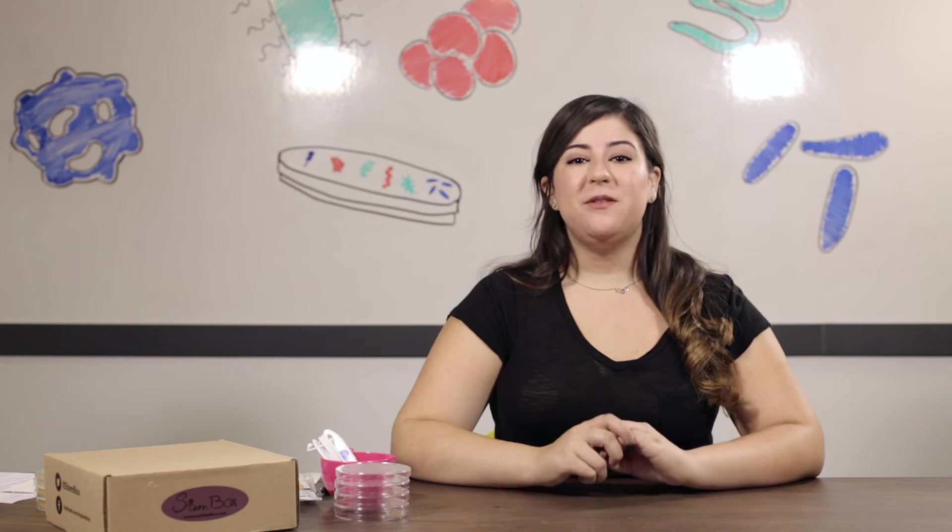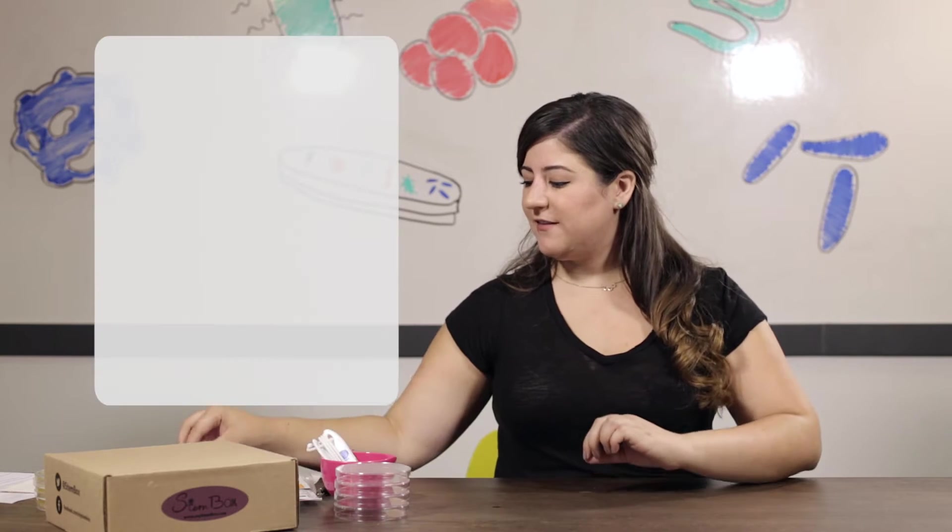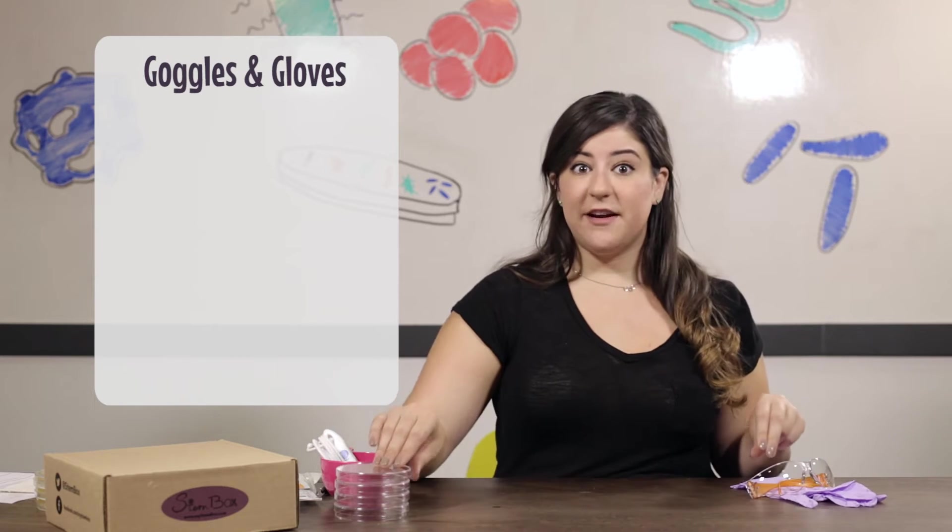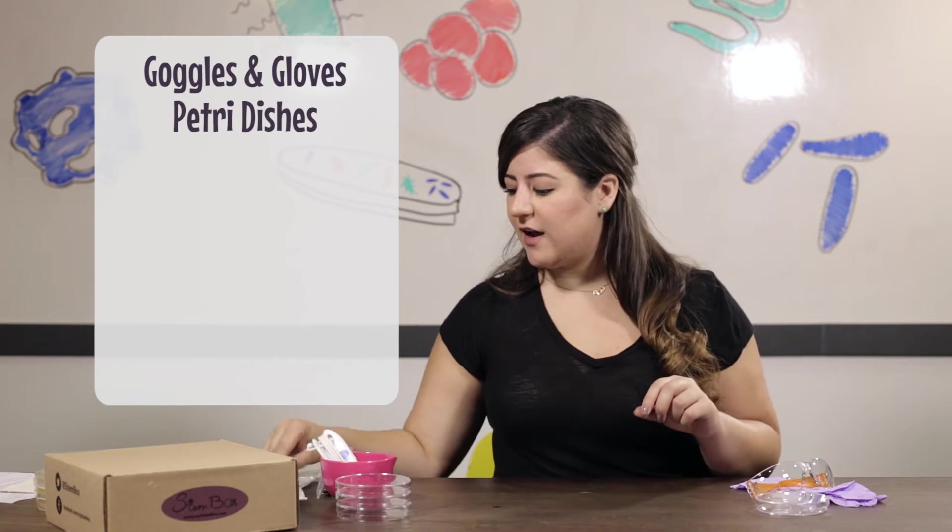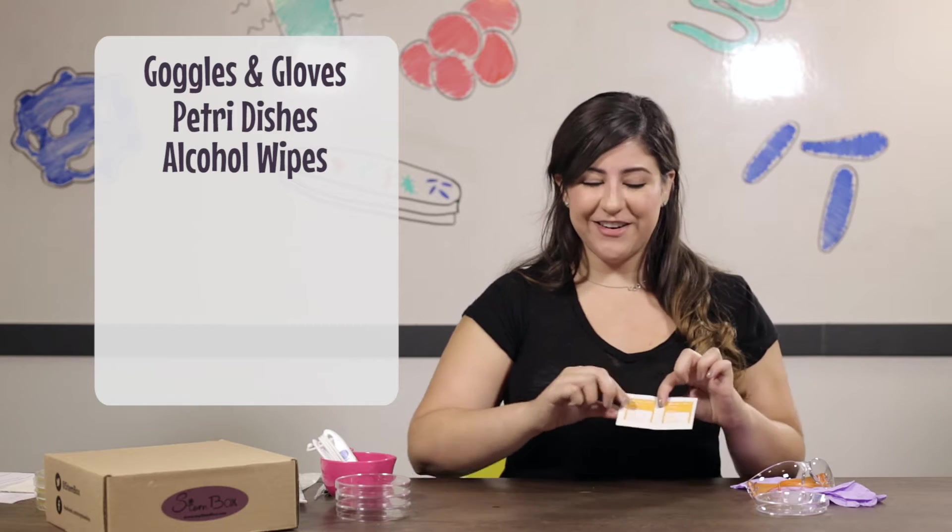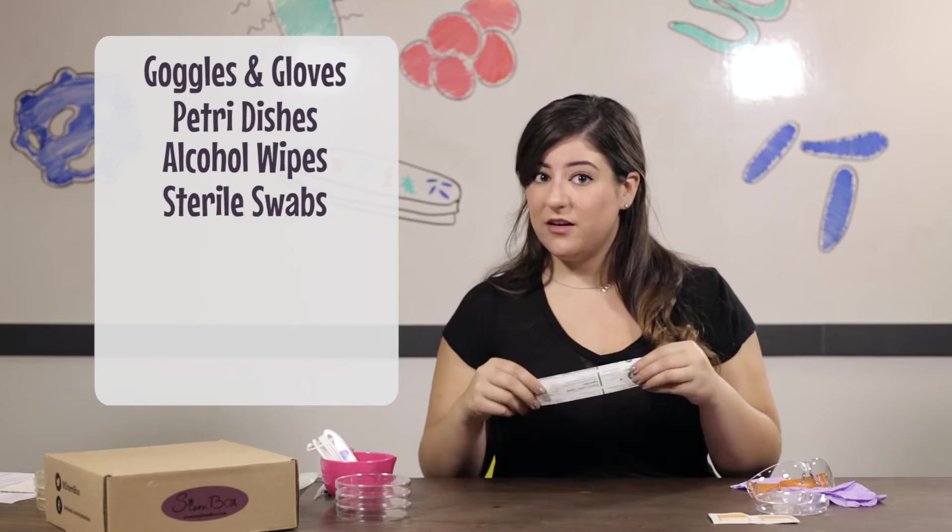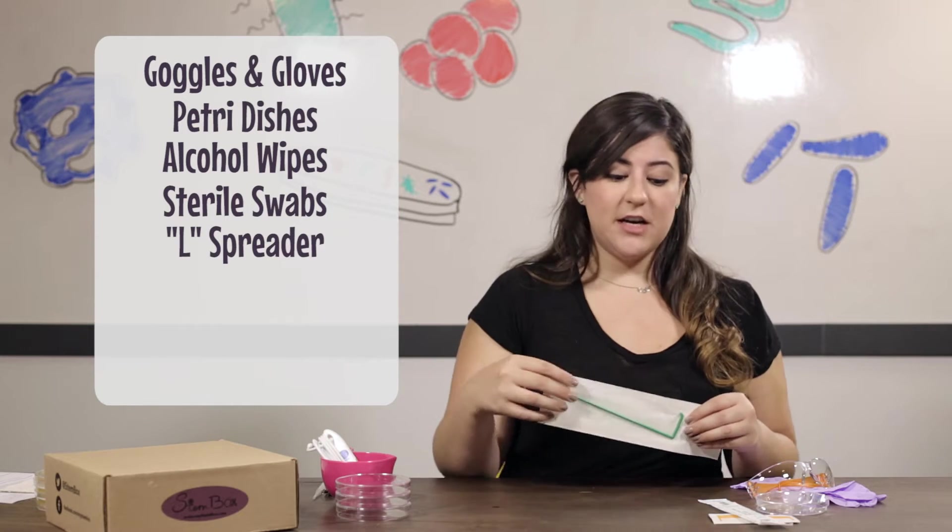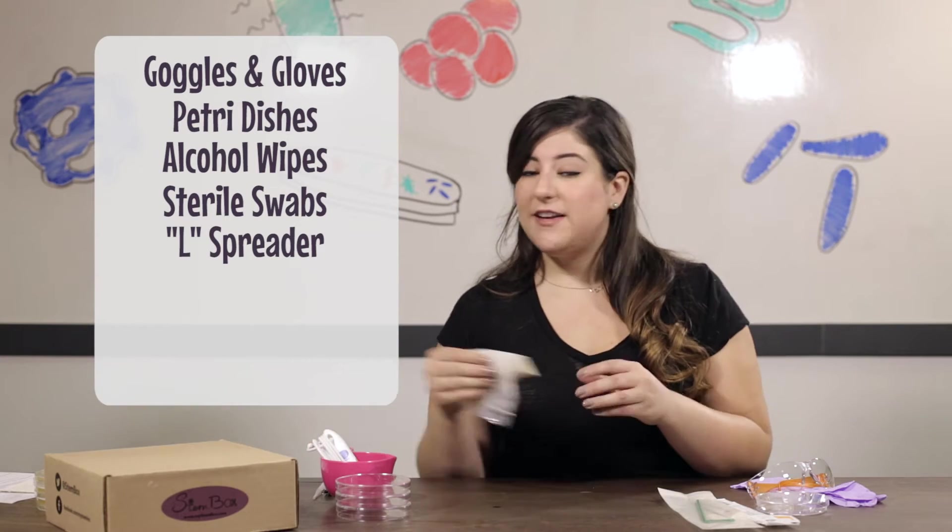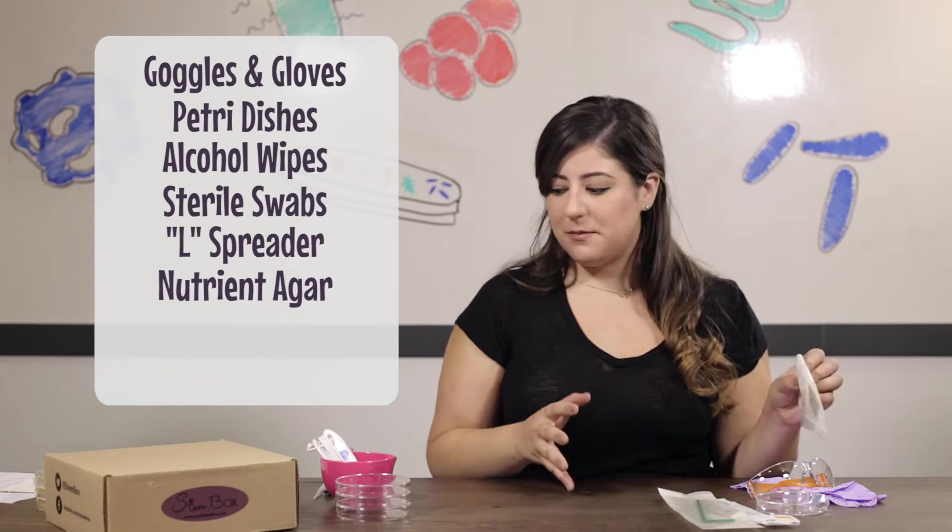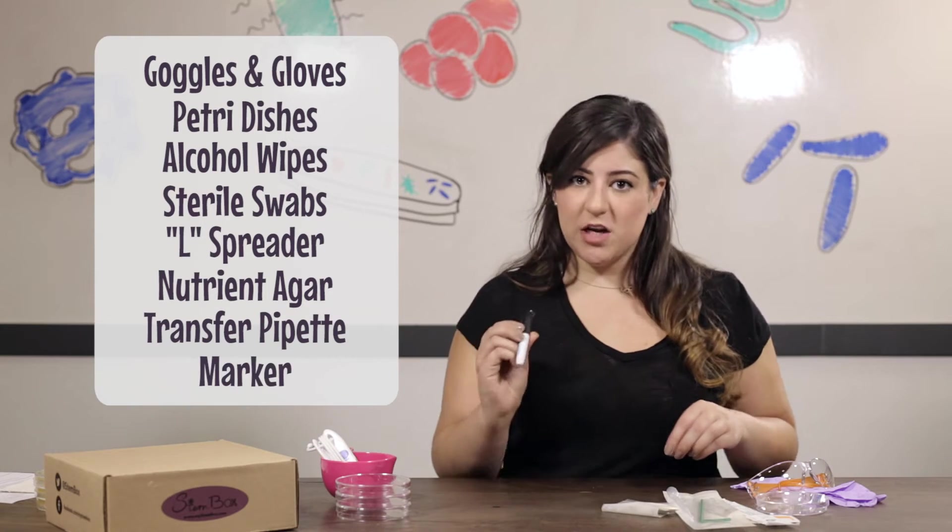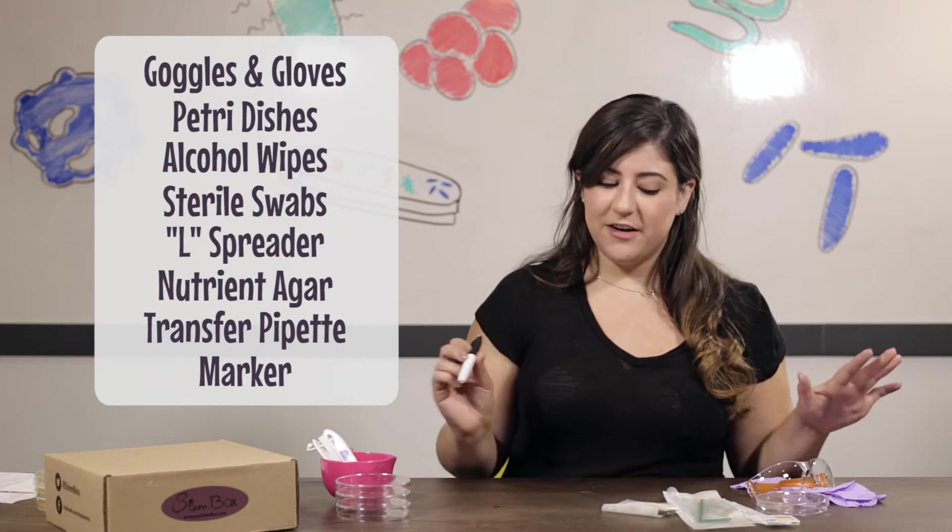This month's Stembox will include the following items. Safety gear as usual like goggles and gloves. You'll have several petri dishes for your cultures. You will have alcohol wipes to clean off all your instruments in between, sterile swabs for collecting, an L spreader to spread your bacteria evenly around the plate. You'll definitely have nutrient agar to create your plates, a transfer pipette for liquid samples, a permanent marker to mark your samples like every good scientist does.